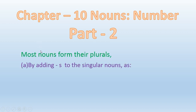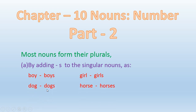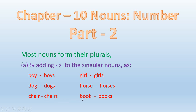You can open your PC Range Grammar. Rule number one: most nouns form their plurals by adding S to the singular noun. Generally, add S and it's done. For example: boy→boys, girl→girls, dog→dogs, horse→horses, chair→chairs, book→books. So Rule 1 is: generally you will add S.